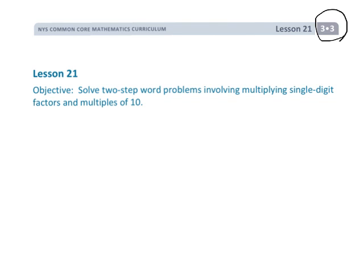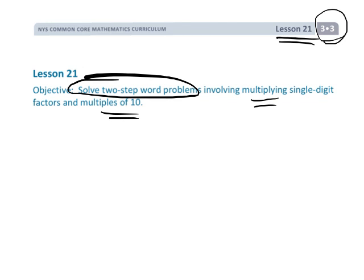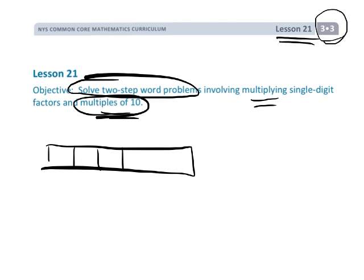This is Grade 3, Module 3, Lesson 21. We're going to be solving two-step word problems using multiplying multiples of 10. This is a big opportunity for us to practice multiplying by multiples of 10. We're also going to combine that with using some tape diagrams, so this is just bringing everything all together in one lesson.